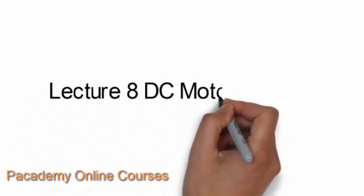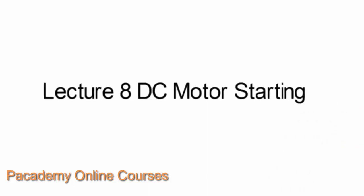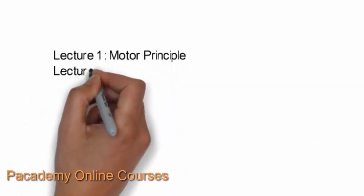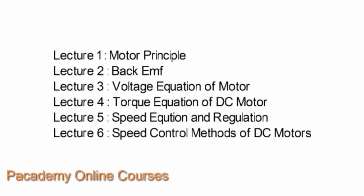This is lecture eight on DC motors, covering DC motor starting and all the starters of DC motors. So far we have looked into the motor principal, back EMF, voltage equation, torque equation, speed equation, and speed control methods of DC motors. Speed control above and below the rated speed was achieved by various methods like varying the flux and varying the armature voltage, which was also achieved by varying the resistance. The Ward-Leonard system was also covered.